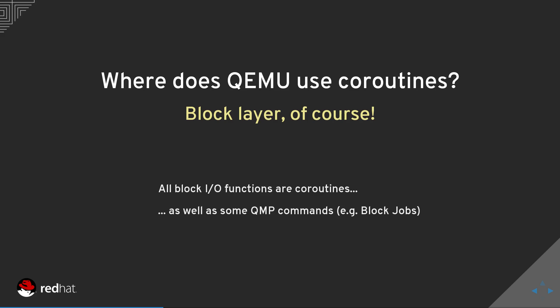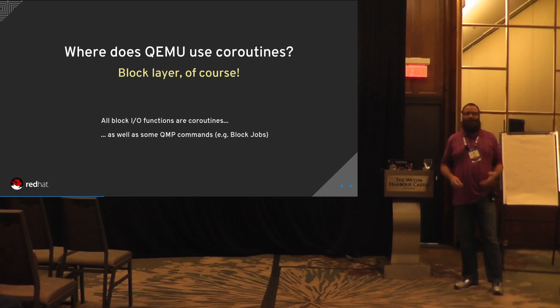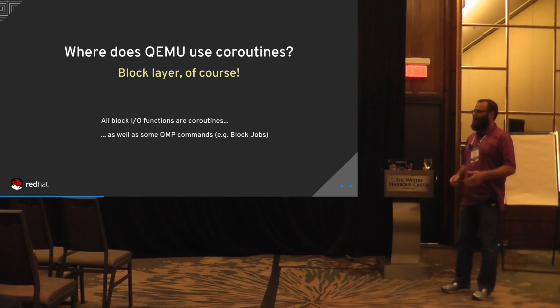Where does QEMU use coroutines? Right now it's mainly in the block layer. There's nothing about coroutines that would prohibit use elsewhere, but that's where they're used. It's a general concept, not something tied exclusively to the block layer.